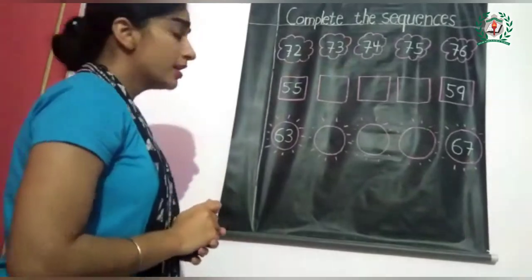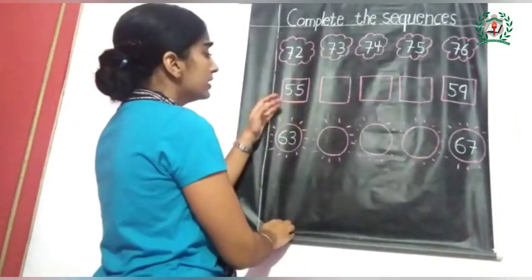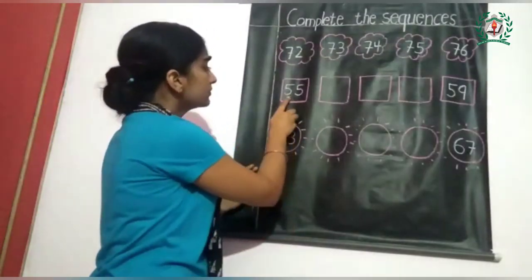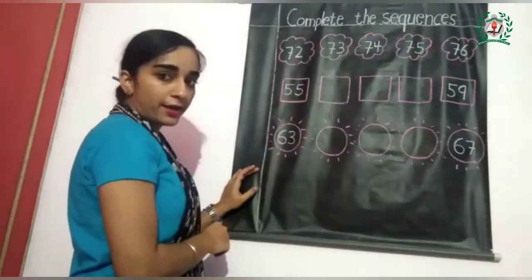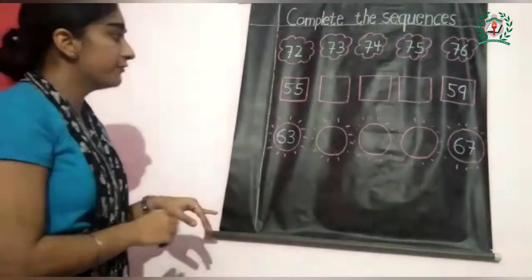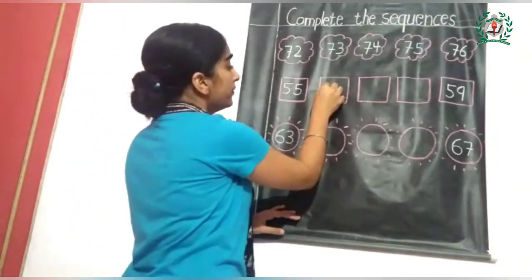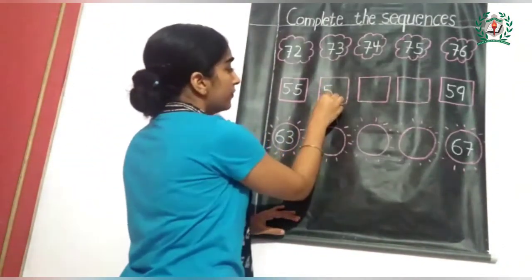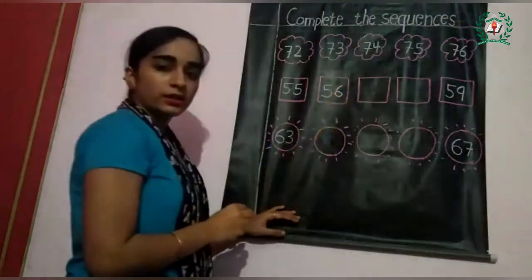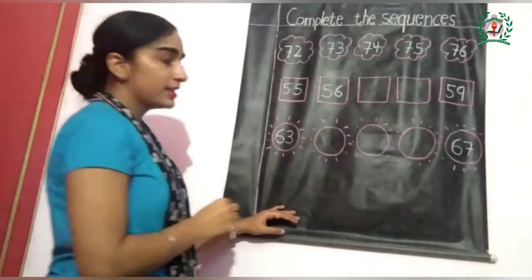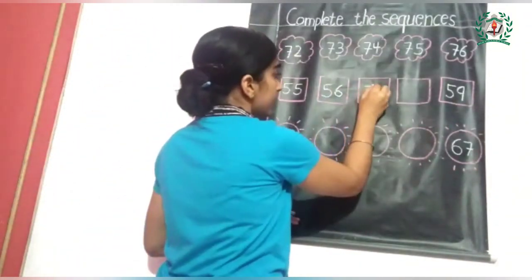Now let's do the second question. This is 55. What comes after 55? It's 56. What comes after 56? It's 57.